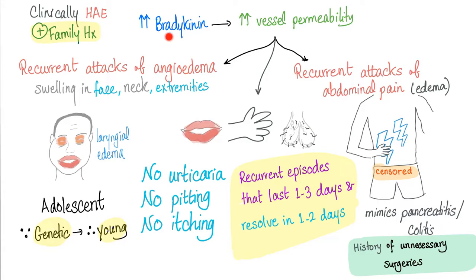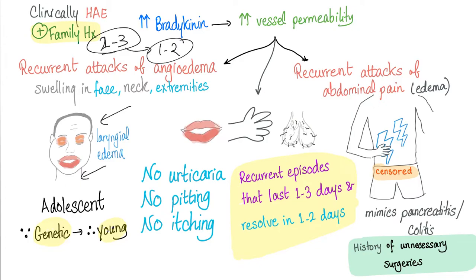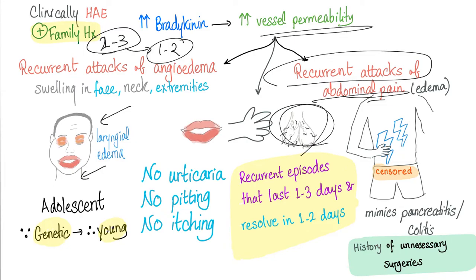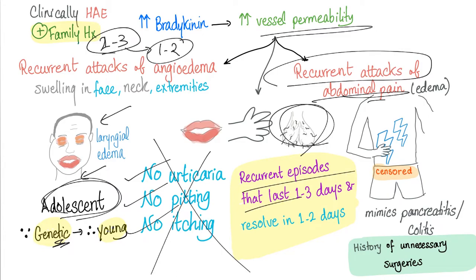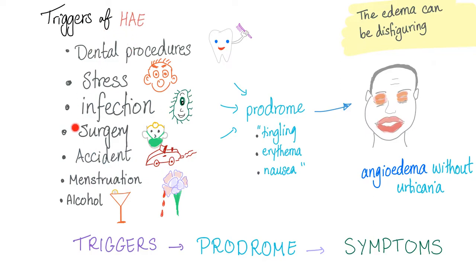Clinically, hereditary angioedema has a positive family history. Increased bradykinin increases vessel permeability, leading to recurrent attacks of angioedema — swelling in the face, neck, extremities, eyelid, lips, and laryngeal edema. The attack lasts two to three days and may resolve or the patient may die from asphyxia. Recurrent attacks of abdominal pain are common, and swelling in the genitalia as well. The patient is usually young. No urticaria, no pitting, no itching because this is not an allergy.